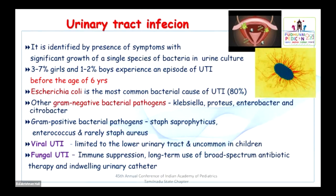Other gram-negative bacterial pathogens include Klebsiella, Proteus, Enterobacter, and Citrobacter. Rarely, gram-positive pathogens like Staph saprophyticus, Enterococcus, and Staph aureus can also be the cause. Viral UTI is usually limited to the lower urinary tract and uncommon in children. Fungal UTI is also very less common, but can occur in children under immunosuppression, with long-term broad-spectrum antibiotic therapy, or an indwelling urinary catheter.